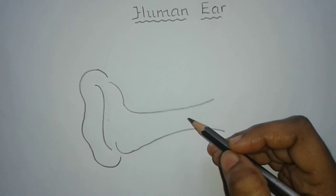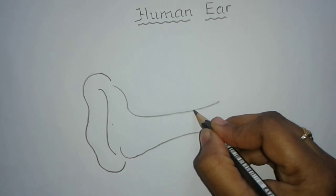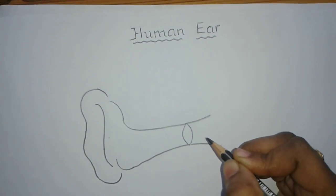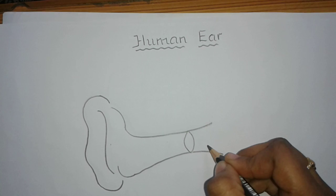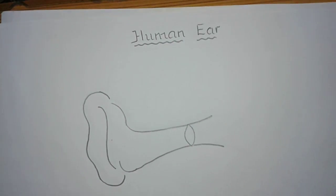Now draw the important part of the outer ear, that is the tympanum. It is also called the eardrum. This tympanum separates the external ear from the middle ear and sound waves make the tympanum vibrate.